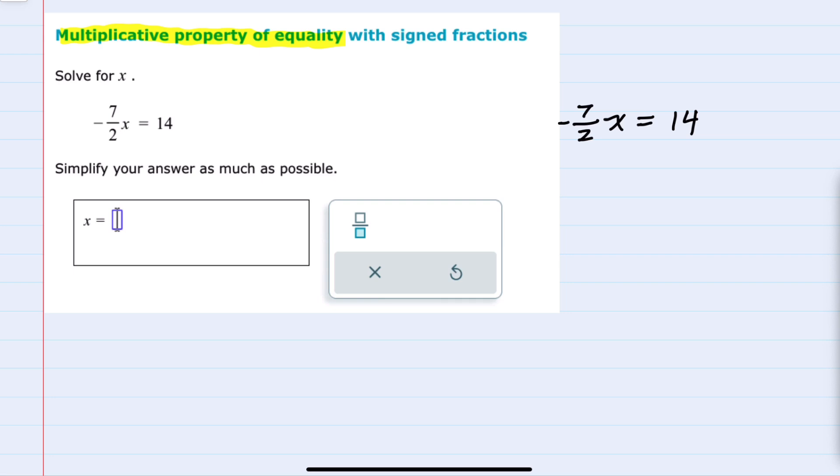Using the Multiplicative Property of Equality means that we can multiply this equation by any number as long as we multiply both the left and right hand sides of the equation by the same number.